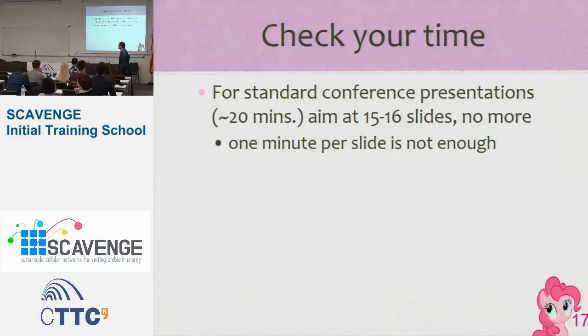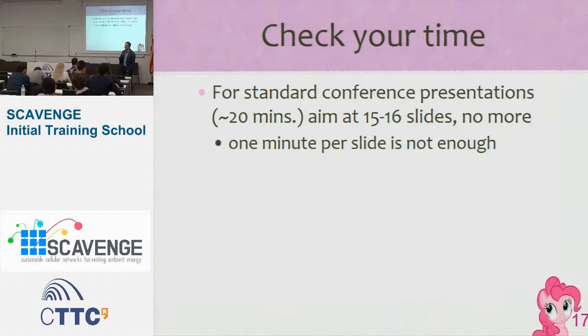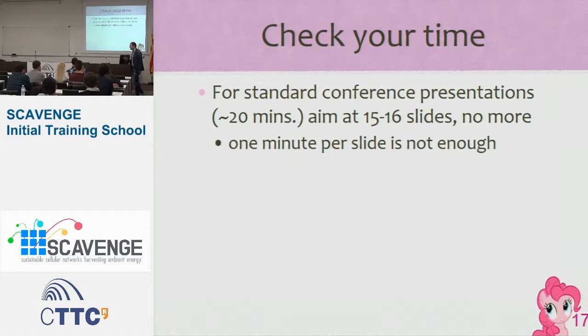Check your time. For a standard scientific conference presentation you generally have around 20 minutes. Do not prepare more than 15 to 16 slides. It is very hard to discuss one slide for less than one minute in a scientific talk, so the first and foremost goal of your presentation is to avoid going out of time. If you try to say everything you did, 20 minutes will not be enough — you will end up rushing through or not finishing the most important part.